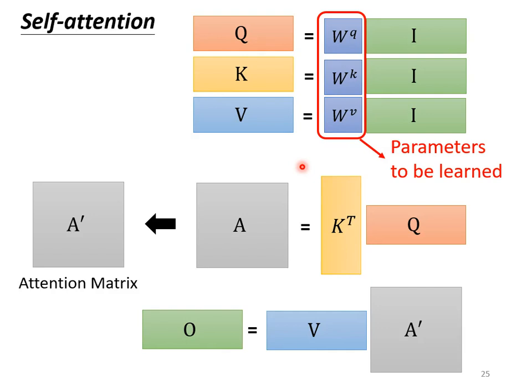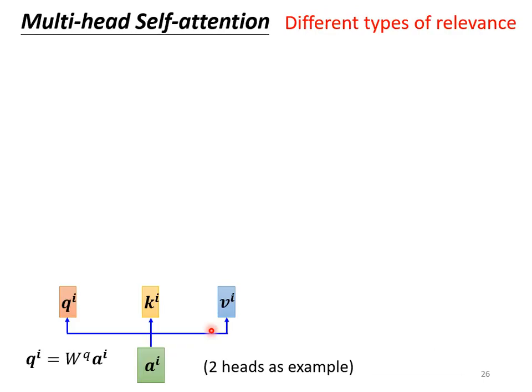There is an advanced version called multi-head self-attention, which is widely used today. In homework 4, the original code uses multi-head self-attention with 2 heads; the TAs hinted to change it to 1 head to pass. But some tasks like translation and speech recognition benefit from more heads for better results. The number of heads is a hyperparameter that requires fine-tuning.